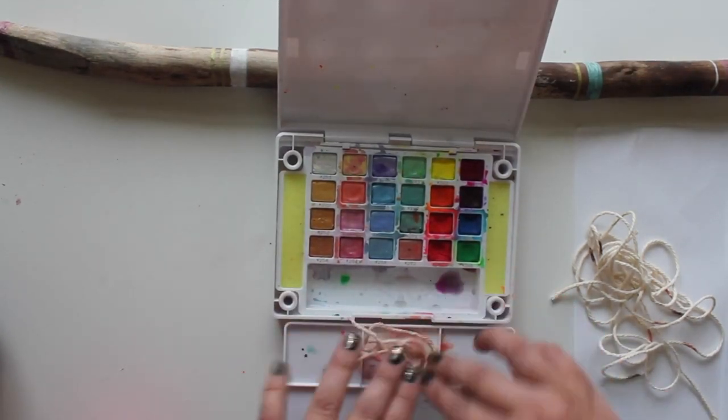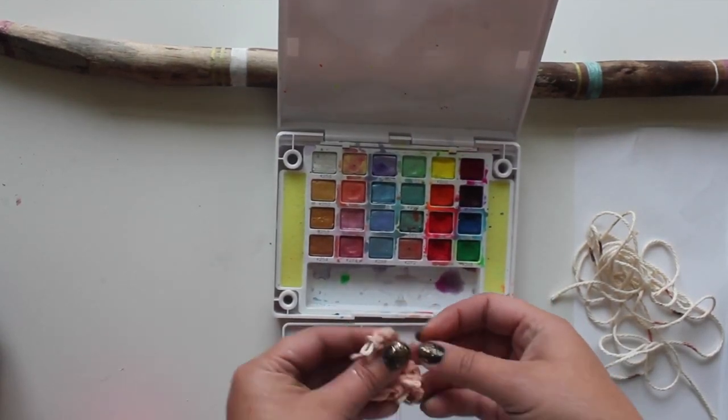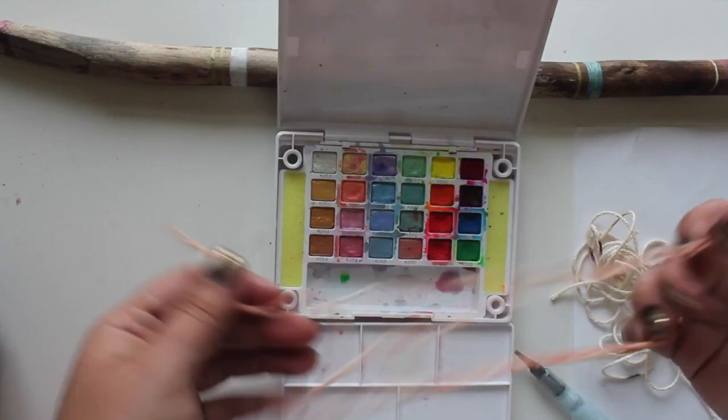I'm using the metallic and pearlescent paints in the Koi Creative Art Colors palette. Add a few colors to your palette and dip a long strand of yarn in it to dye it.